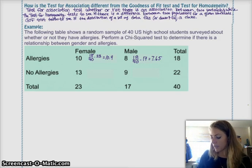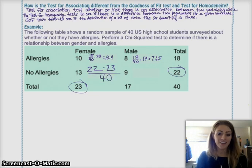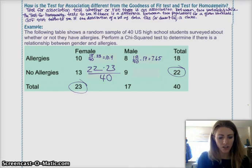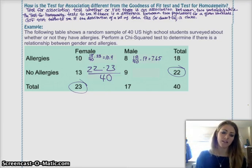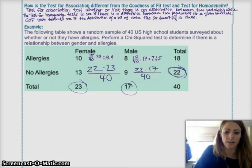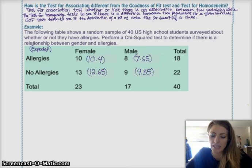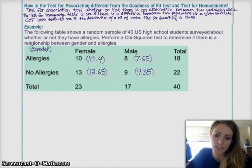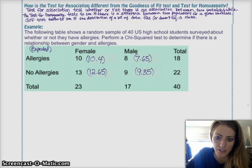So, for the no allergies, it would be 22 times, because that's my row total, times 23, because that's my column total, divided by my total total, which is 40. Hey, look at that. That ends up, you know, but I wanted you guys to understand the concept behind it, and not just memorize a formula. So, that would be my no allergies female expected value, and then for the male, it's going to be row total, 22, times my column total, 17, all over my total total. And so, then just use a calculator to actually calculate those. So, your expected values end up being 10.4 for female allergies, 7.65 for male allergies, female no allergies is 12.65, and male no allergies is 9.35.